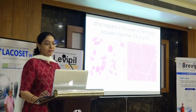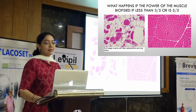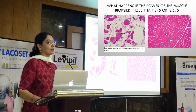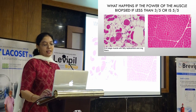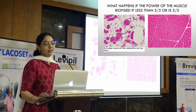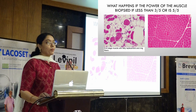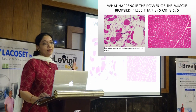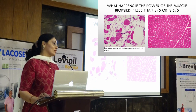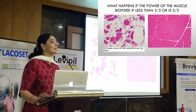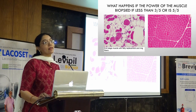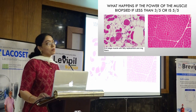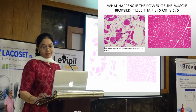And if it is 5 by 5, this is how a normal muscle looks — all the fascicle architecture is maintained, it is polygonal, nice looking. We will actually report 'no diagnostic pathology' on this. That is why we require the involved muscle at at least 4 minus or 3 by 5 power.